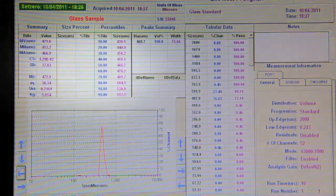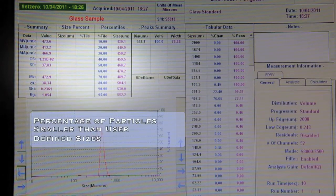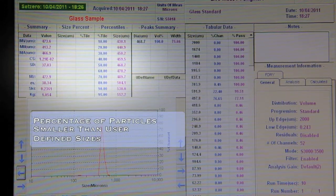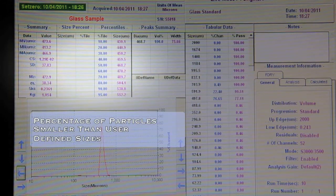The FLEX software shows information such as the percentage of particles smaller than a series of user defined sizes. For example, if you key in 50 microns, the software will tell you what percentage of the sample is smaller than 50 microns.